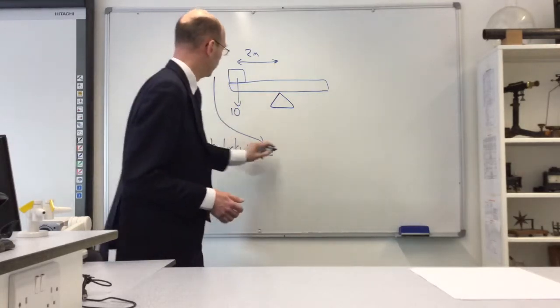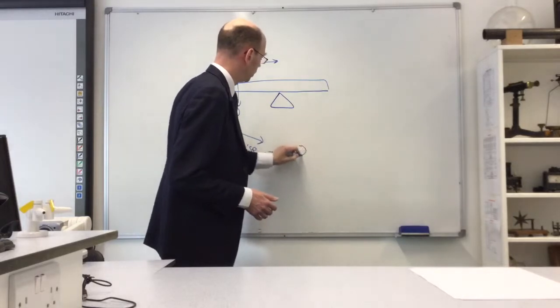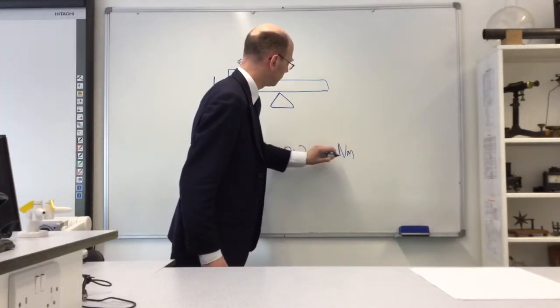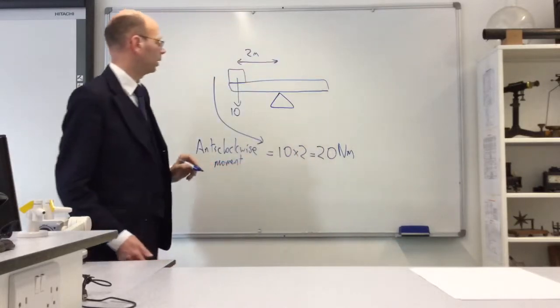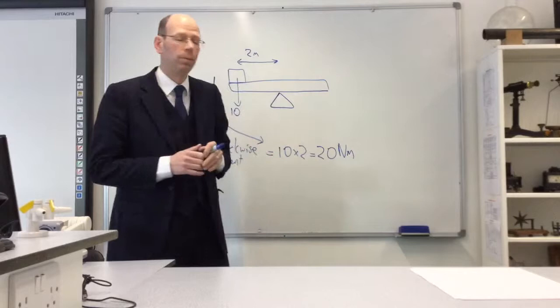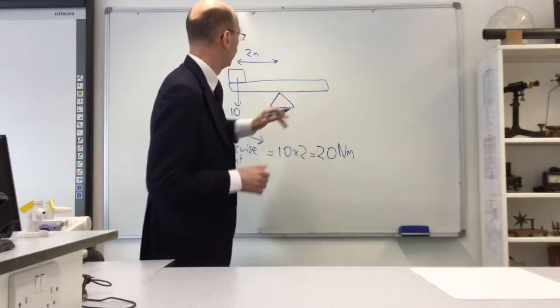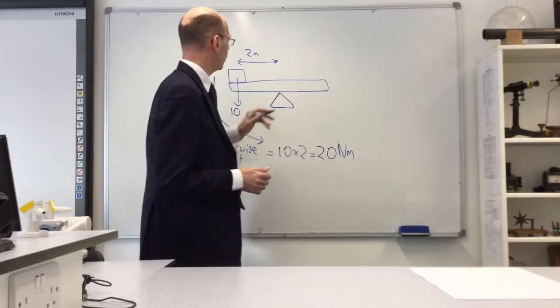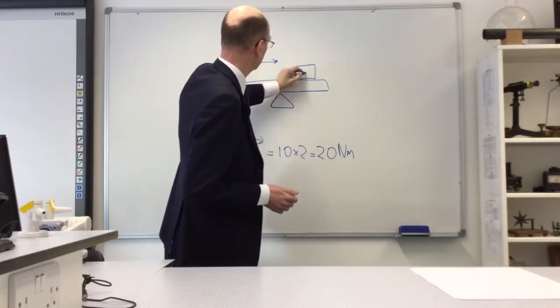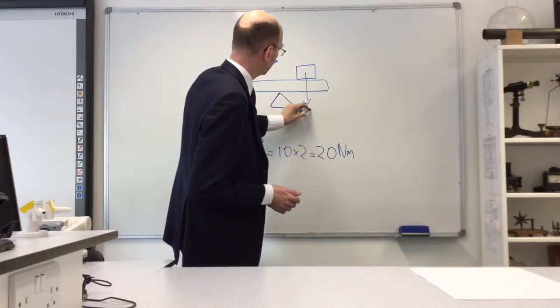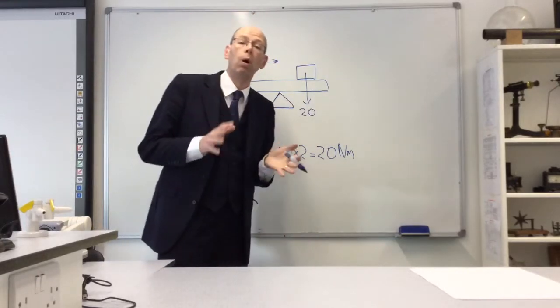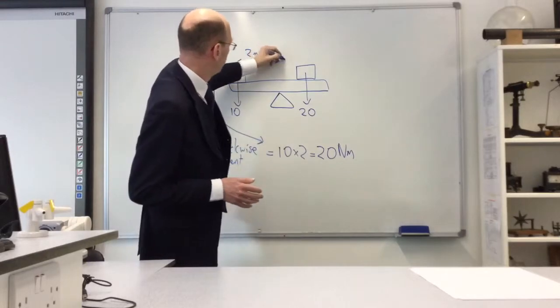The anti-clockwise moment—the force times the distance trying to spin it anti-clockwise—is 10 times 2, which equals 20 newton-meters. Now suppose I want my bar to balance, to be in equilibrium. I'll have to put a weight on the other side. Let's use a 20 newton weight. To make it balanced, I only need to put that 1 meter away from the pivot.